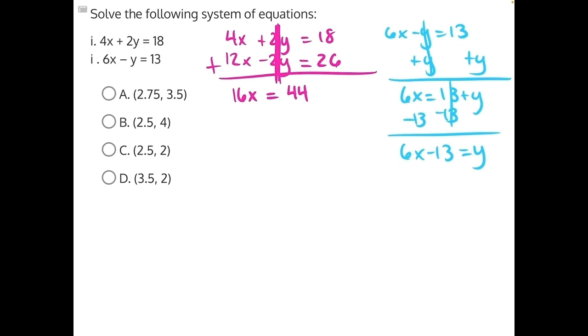Then we would plug this value of y, 6x minus 13, into our first equation. And that would look something like this. I'm going to go ahead and bring this around here so we have more room. 4x plus 2 times y, which is 6x minus 13, is equal to 18.